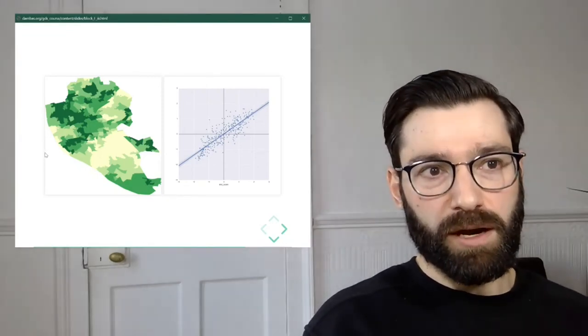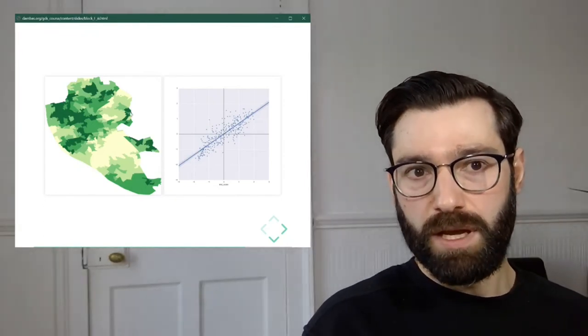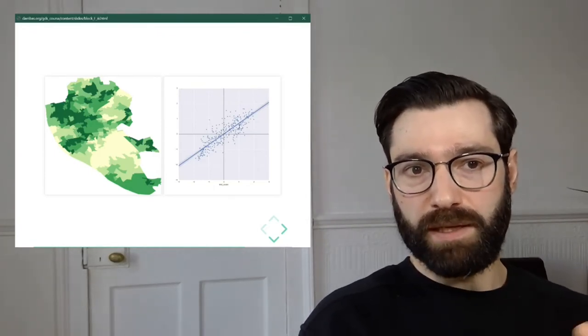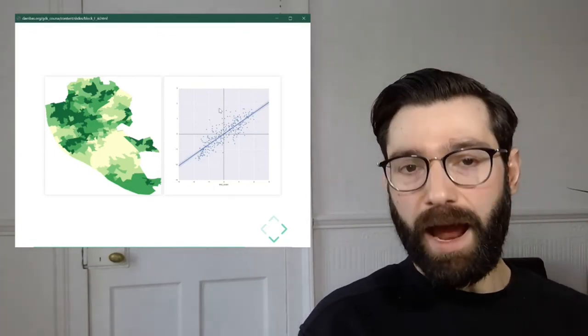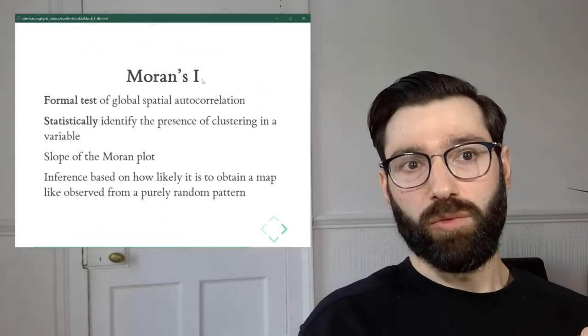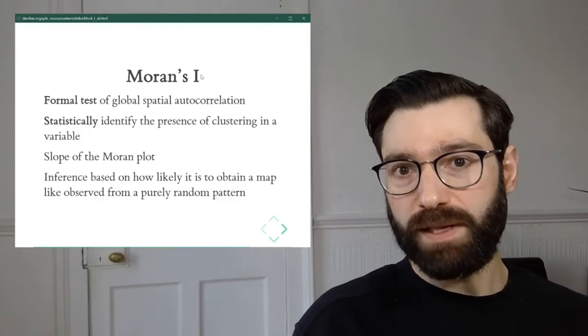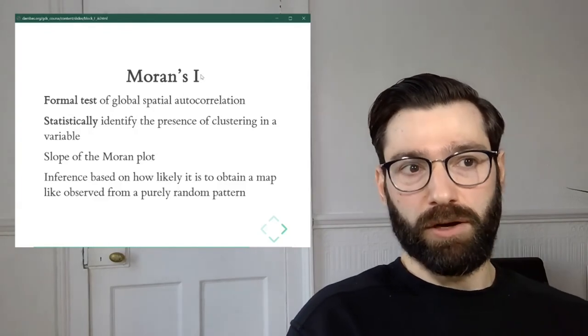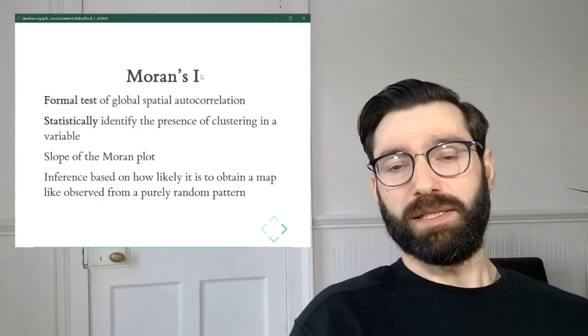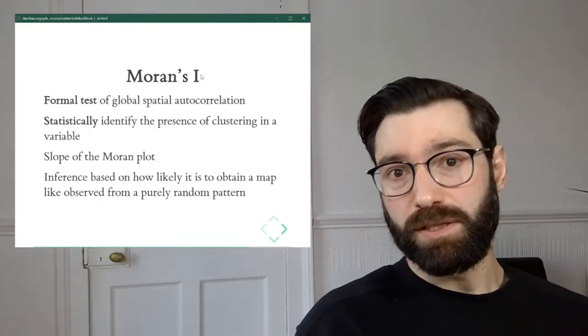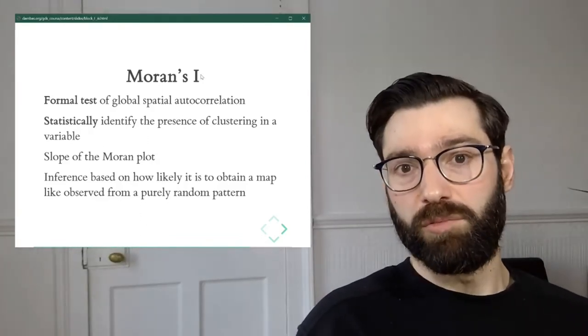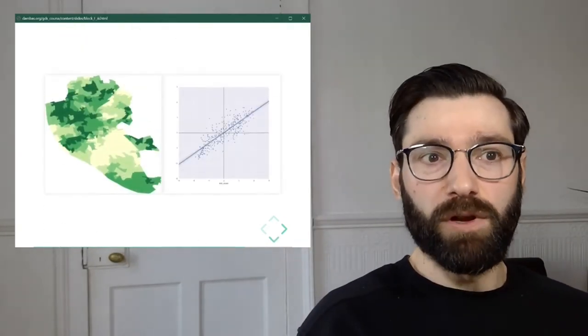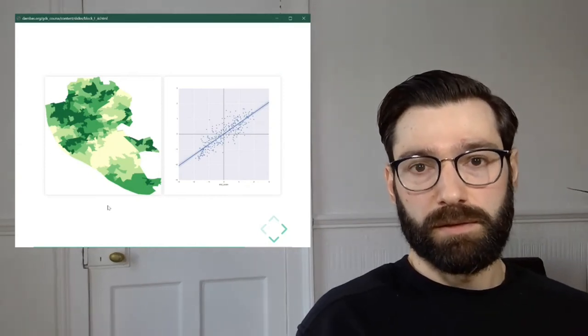This is a highlight of global spatial autocorrelation, that it's a way of summarizing information. We start with an entire map, convert those into a graphic display that doesn't have space except for the spatial lag, and then we end up into a summary that we will call Moran's I, which is a statistic that is a formal test for global spatial autocorrelation, and it tries to statistically identify the presence of clustering in a variable.